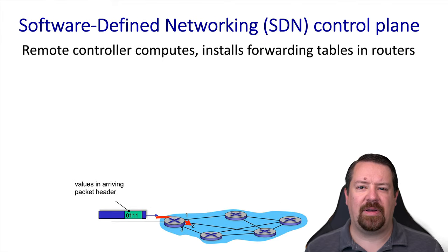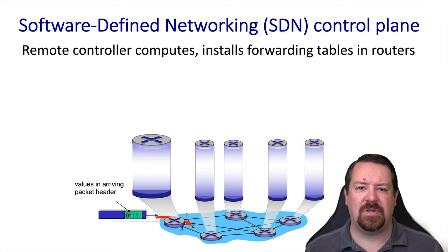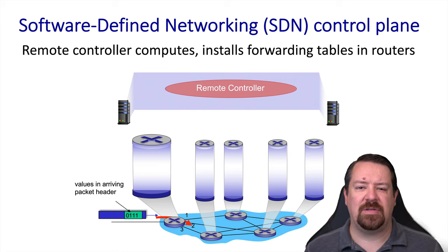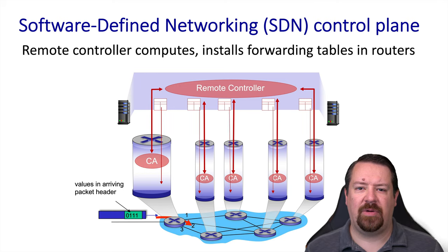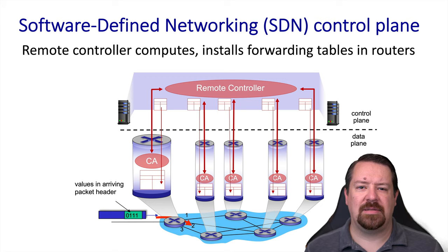In contrast, in the software-defined networking case, we again have our packet arriving. Routers look at the fields in the packet's header, including but not limited to the destination address, and again they're going to match this against their local forwarding tables, but those tables come from outside the router. The SDN controller or controllers are remote and create the forwarding tables and distribute them to all the routers. So in this case, the division between control plane and data plane is also a division between the physical routers and the separate SDN controllers.